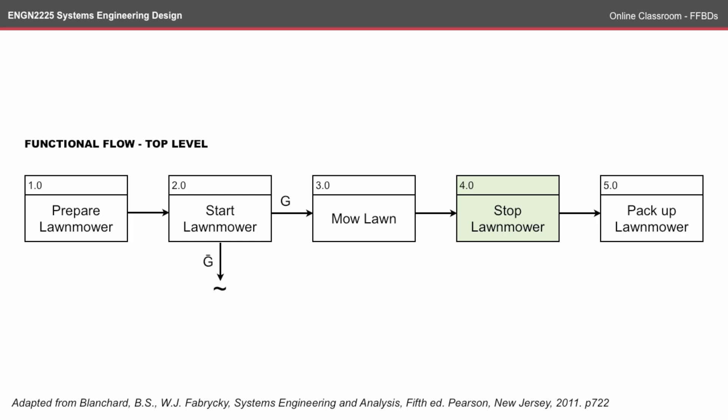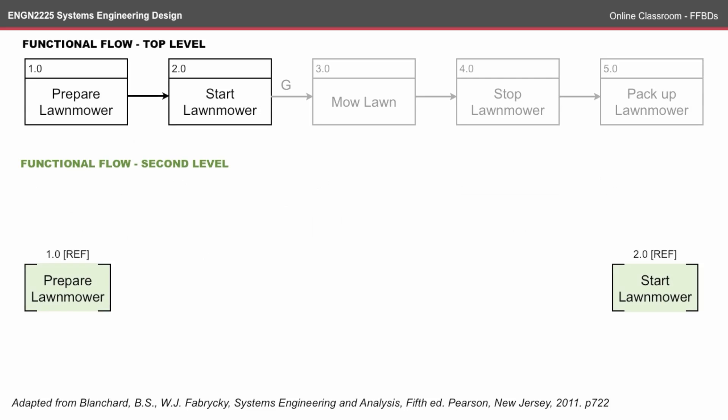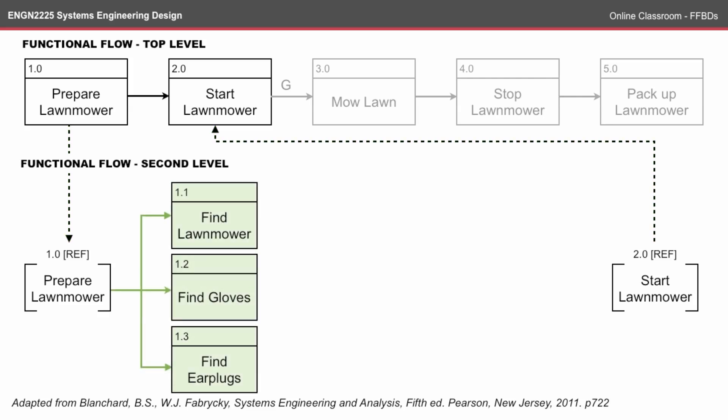Looking at the second flow level — the steps between step one, prepare the lawnmower, and step two, start the lawnmower — we go to the second level of the functional flow and use two reference blocks. These reference blocks are a kind of ghost block that you need to fill in the steps between, and they are linked to the top-level flow diagram through dotted arrows. It's likely that to prepare the lawnmower, I need to first find the lawnmower, and perhaps find some safety equipment like gloves and earplugs.